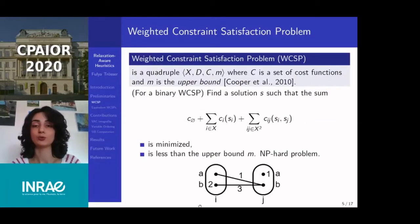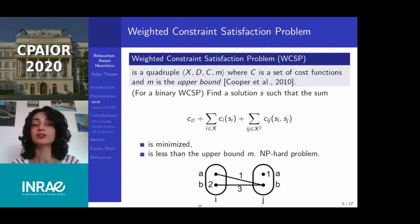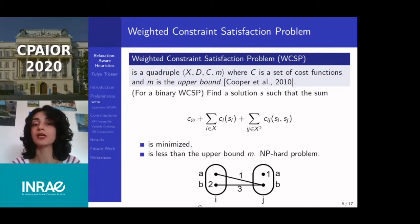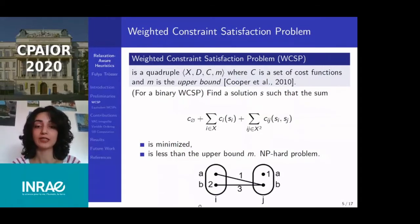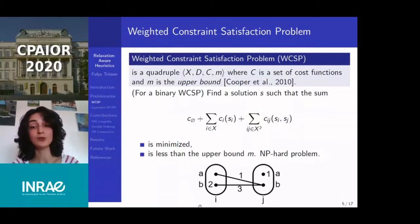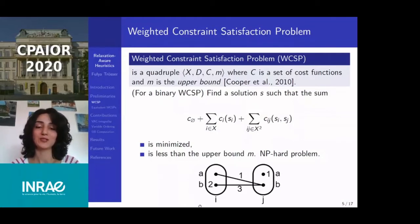A WCSP is a quadruple consisting of a set of variables, their domains, a set of cost functions, and an upper bound m, which is either a positive constant or infinity. The objective is to find a solution S that minimizes the sum of all cost functions, and for which this sum is less than the upper bound m. We focus on binary WCSPs. In this example, the lowest total cost we can obtain is 1, by assigning i to a and j to any value. The C-Zero constant serves as the lower bound, and it is possible to move costs between cost functions to transfer some costs to C-Zero, by enforcing different levels of local consistencies, one of which is VAC.